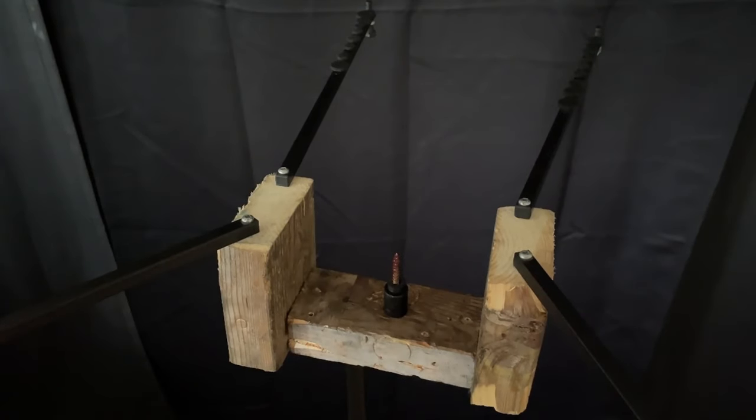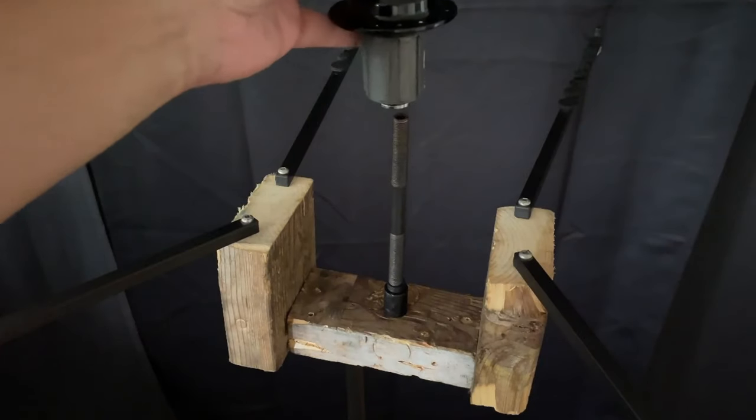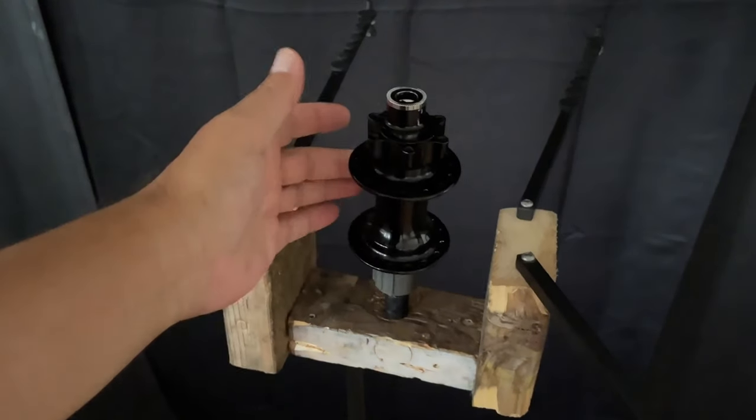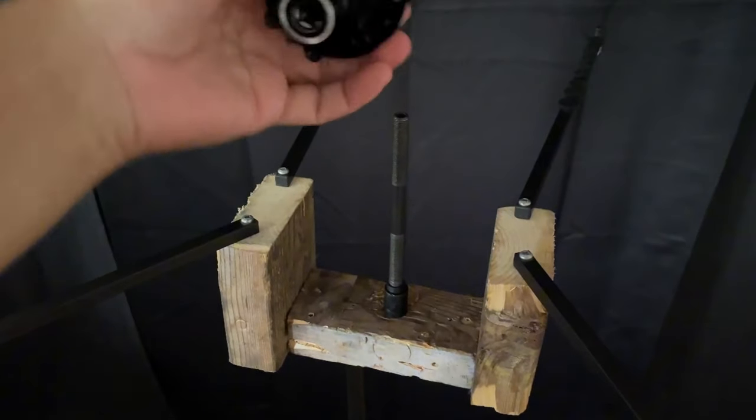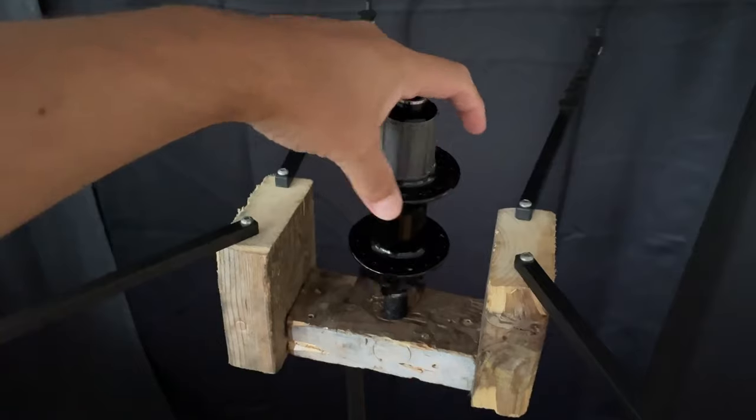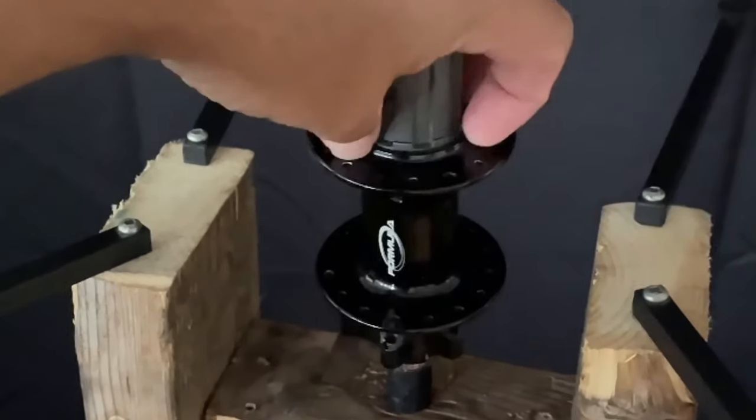The axle will just slide over that. And of course, the hub will just slide right over that, with the axle being not so snug, but snug enough to hold the hub in place. And then you can spin it around. You can find where your key spoke holes would be. And there you have it.